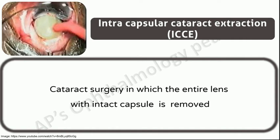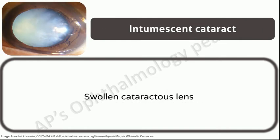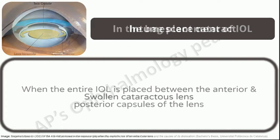Intracapsular cataract extraction: cataract surgery in which the entire lens with intact capsule is removed. Nowadays, this is performed only for dislocation or gross subluxation of the lens. Intumescent cataract: swollen cataractous lens. The complication of this is phacomorphic glaucoma.